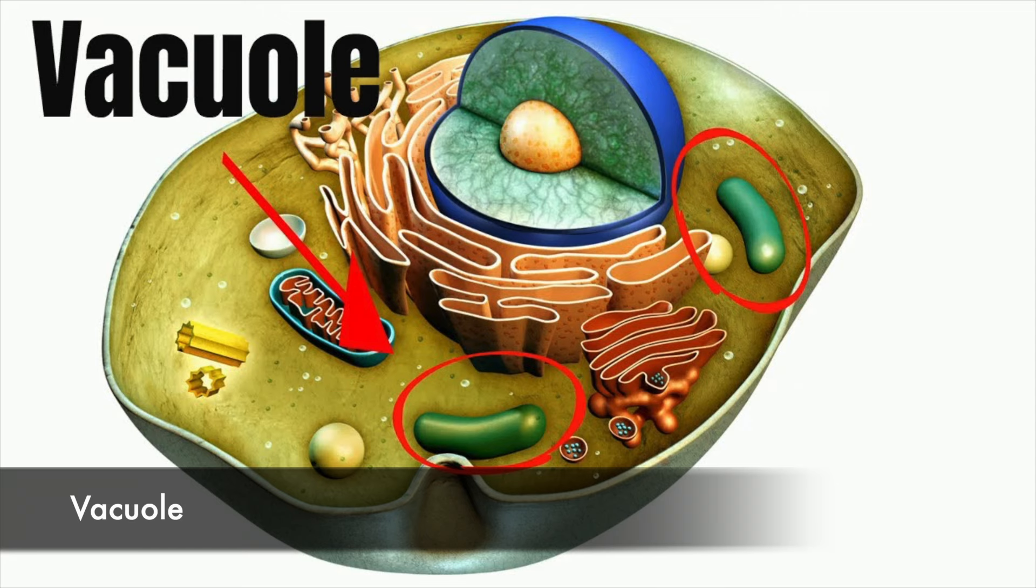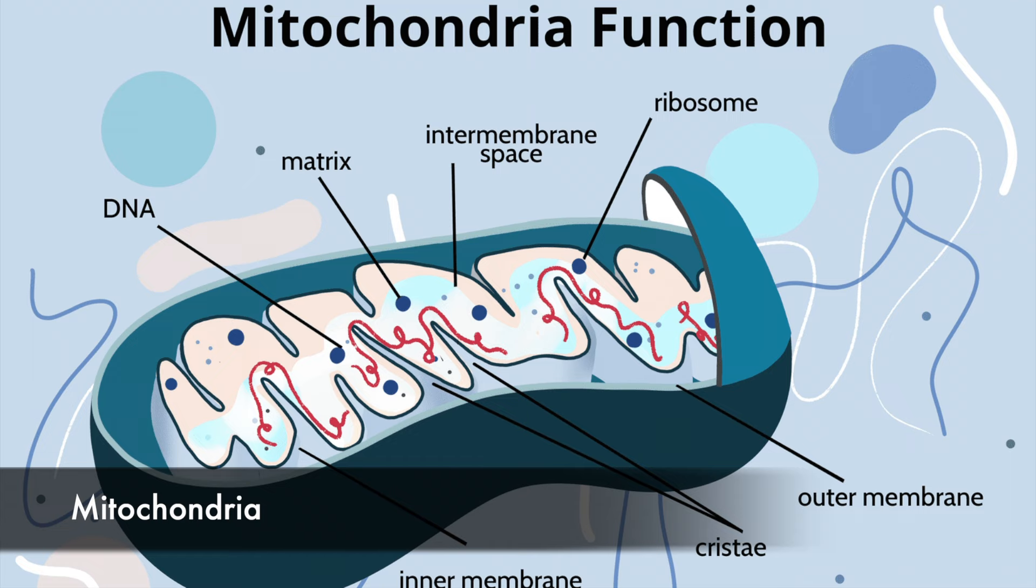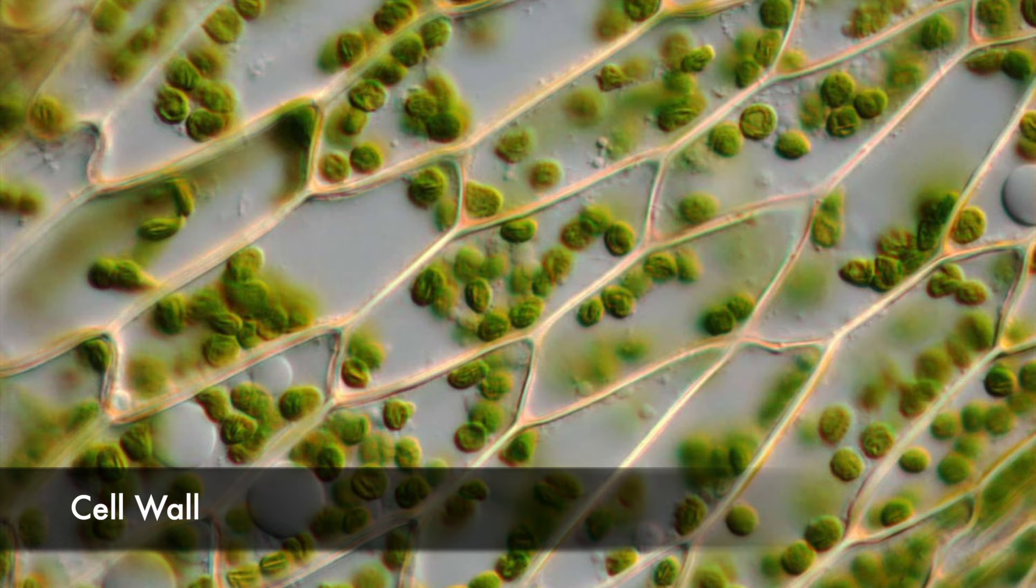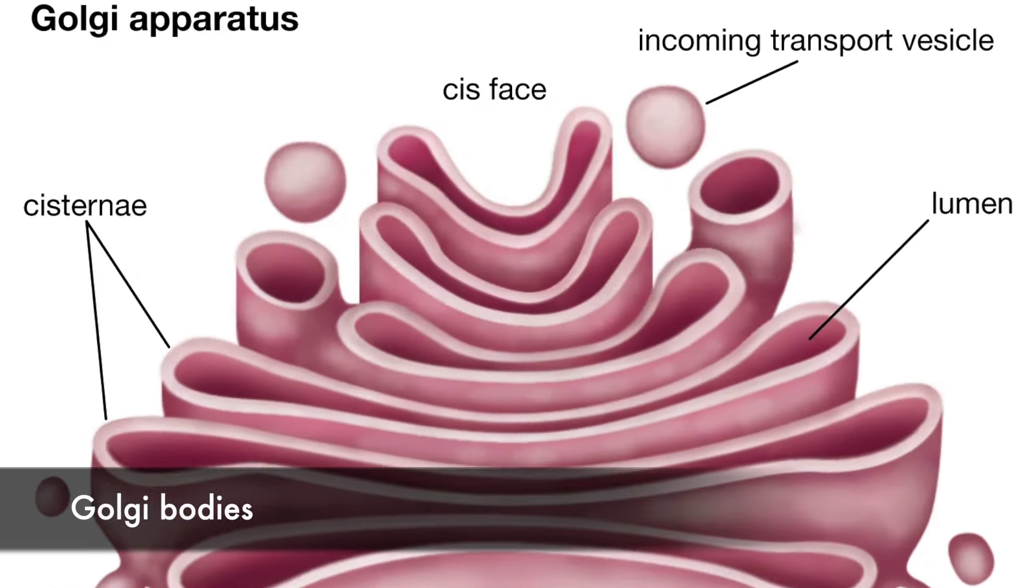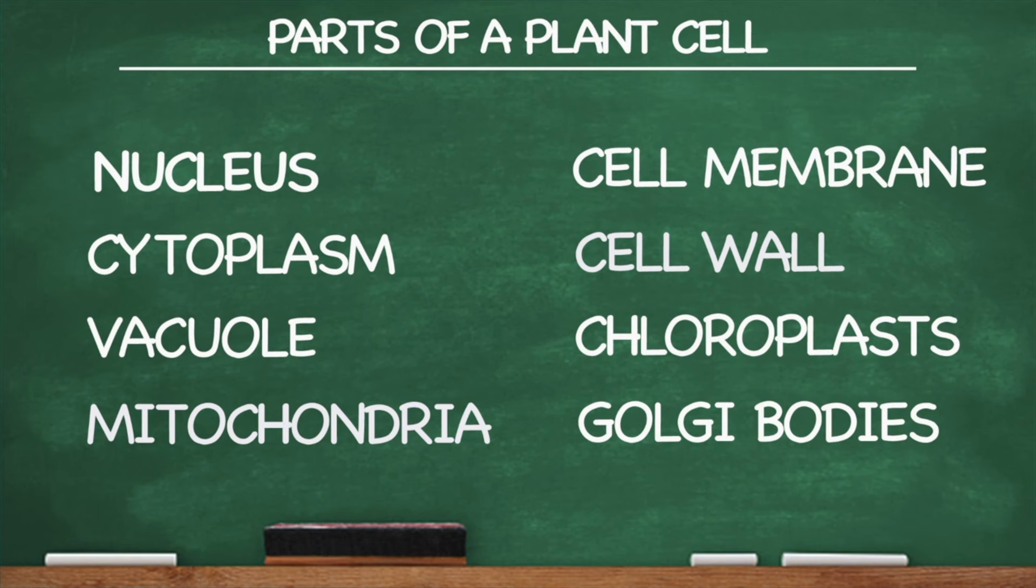Nucleus, cytoplasm, vacuole, mitochondria, cell membrane, cell wall, chloroplasts, golgi bodies. Yeah. These are the parts of a plant cell.